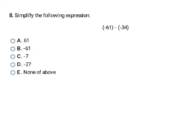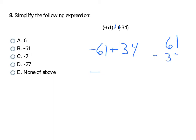I have one last subtraction problem. Remember: when you have subtraction with negative numbers, do stay, change, change. The first number stays the same. The subtraction changes to addition. And the second number changes its sign — so negative 34 becomes positive 34. Now I'm adding two numbers with different signs, so my answer takes the sign of the bigger number. The bigger number is 61 and it's negative, so my answer is negative. Because they're different signs, I subtract: 61 minus 34 is 27. So my final answer is negative 27, which is D.